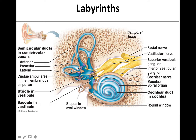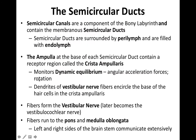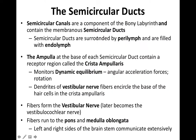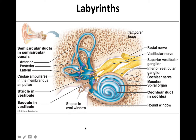Just as the utricle and saccule contain maculae, the ampulla contains a specific receptor grouping called the crista ampullaris — crista being singular. The crista ampullaris monitors dynamic equilibrium — not static and linear forces, but angular forces, specifically rotation. Just like in the cochlea and vestibule, movement is detected by this receptor and signals are sent along the vestibular nerve, the same nerve that carries signals from the maculae.